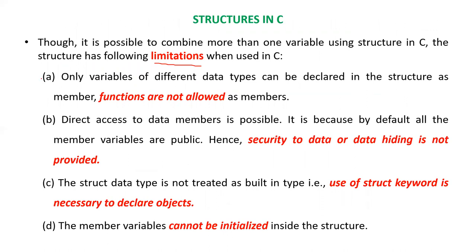There are some disadvantages or limitations of C structures. First, functions are not allowed inside the structure — only variables of different data types can be defined. Second, there is no security and no data hiding; direct access is allowed, which is a disadvantage. Also, when declaring objects of a structure, you need to use the struct keyword, and member variables cannot be initialized inside the structure.